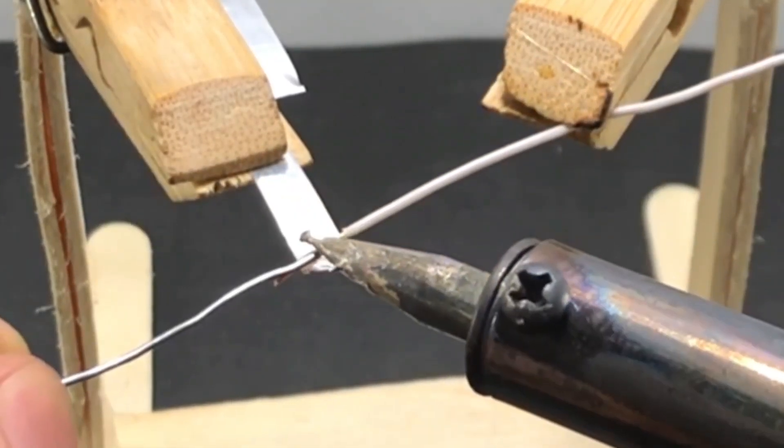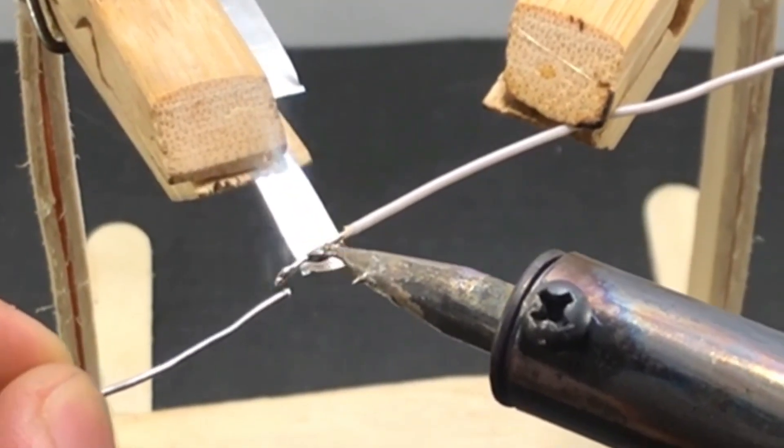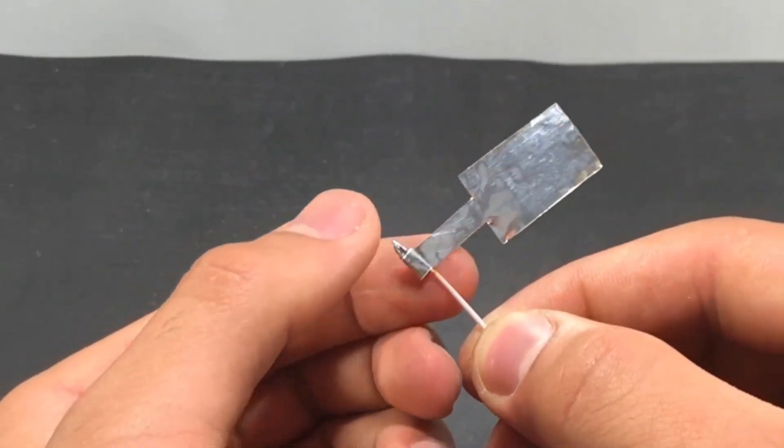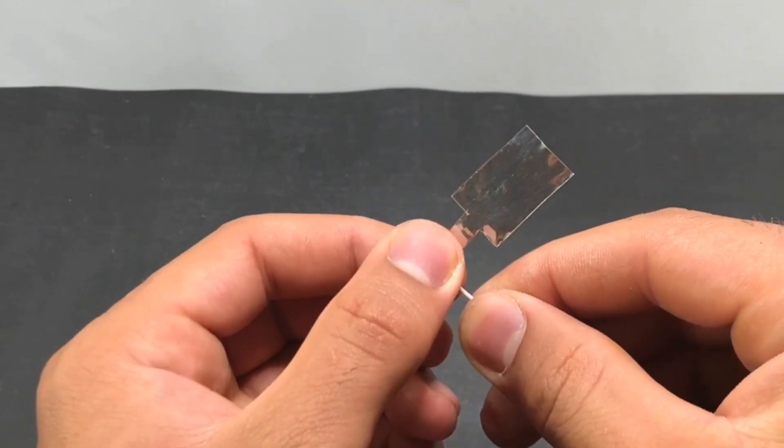Solder a copper wire to the bottom of the foil. We wrap the extra foil around the wire.